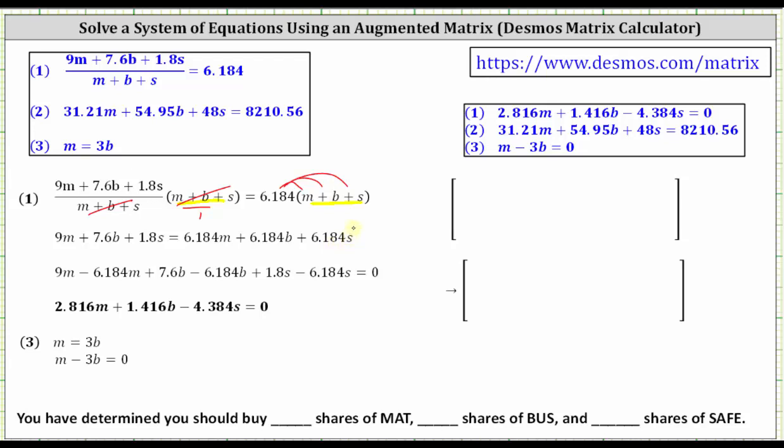Now we need all the variable terms on the left side, so we subtract 6.184M, 6.184B, and 6.184S on both sides of the equation, which gives us zero on the right side. On the left, 9M minus 6.184M equals 2.816M, 7.6B minus 6.184B equals 1.416B, and 1.8S minus 6.184S gives us -4.384S.